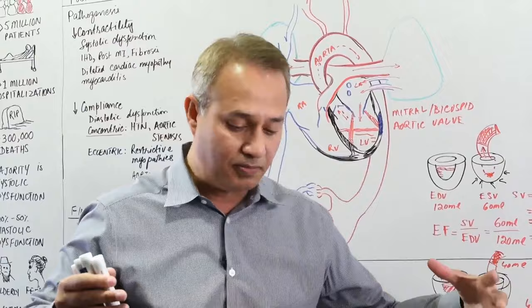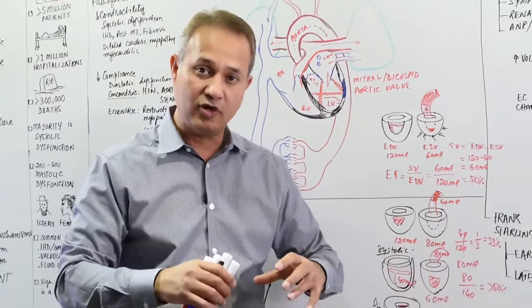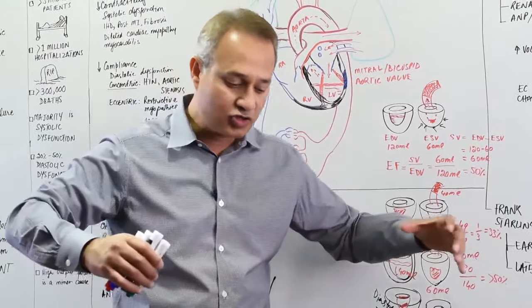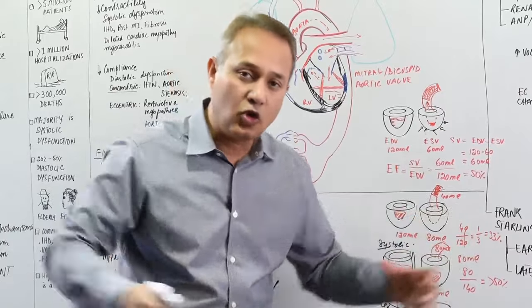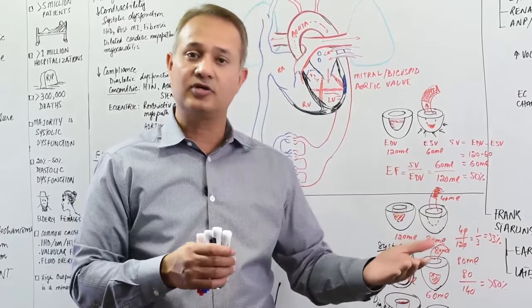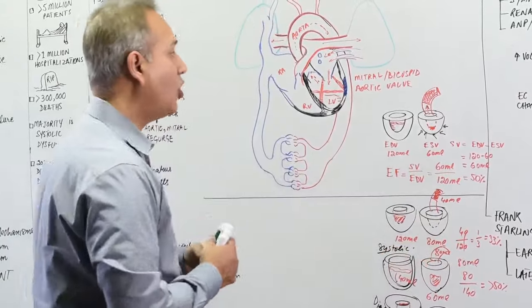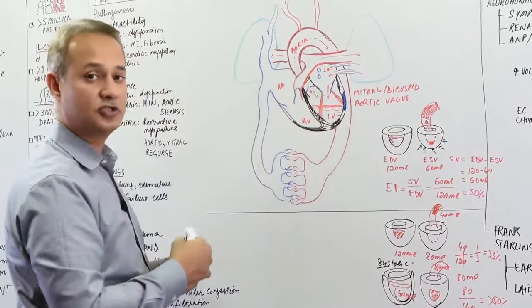In the dilated cardiomyopathy, the heart has become so much dilated and so large that it cannot go into a systole properly. So imagine it's a big bucket with a small amount of volume of blood in it and you try to squeeze the bucket. So if you don't squeeze it all the way, the blood is not going to come up. So all of these are the problems with the systole.